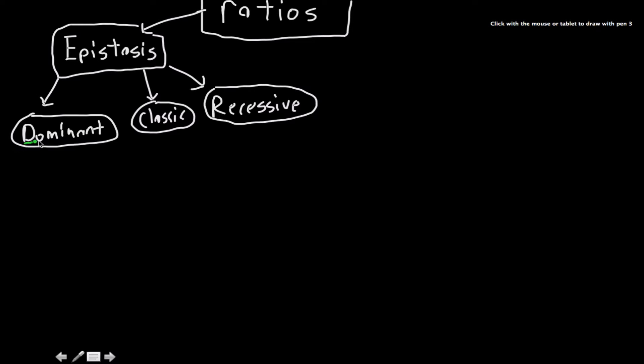So the first one is dominant epistasis. And these are all kind of subjective, so keep that in mind. But you get a 12 to 3 to 1 phenotypic ratio.